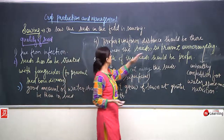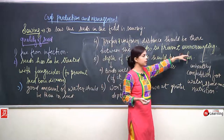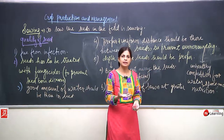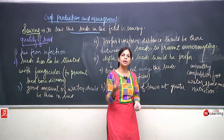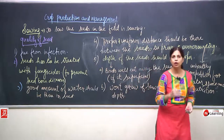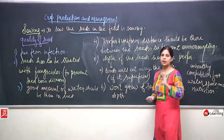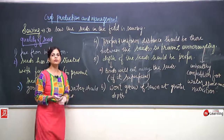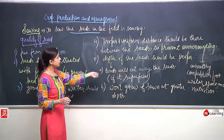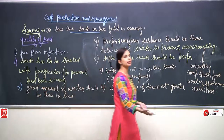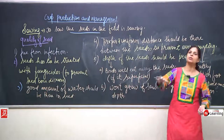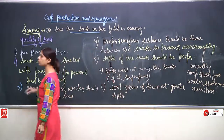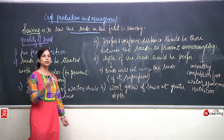Proper and uniform distance must be maintained between seeds to prevent overcrowding — too many plants at one place compete for water, nutrients, and space, leading to poor growth. Seeds must also be sown at a proper depth, not too deep and not too superficial.